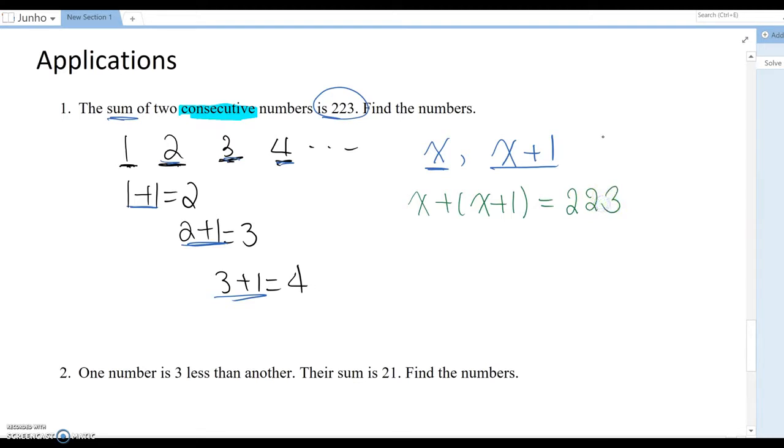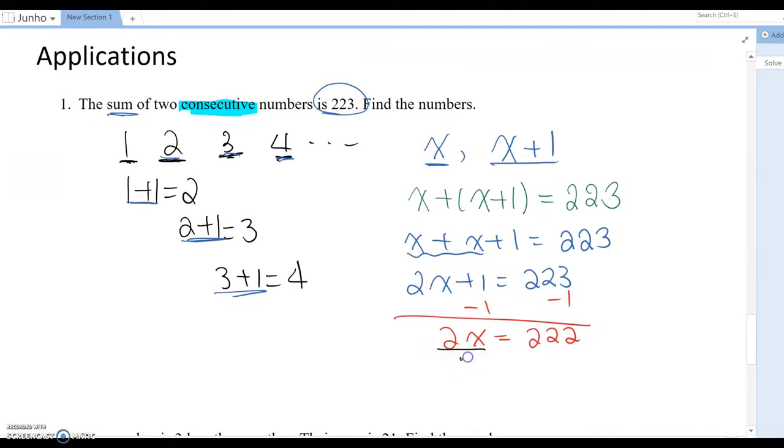Now open the parentheses, so x plus x plus one equals 223. Combine like terms, then 2x plus one equals 223. Now isolate the variable term, so subtract one. Then 2x becomes 222, so 2x equals 222. Last step, divide by the coefficient. Then x equals 111.